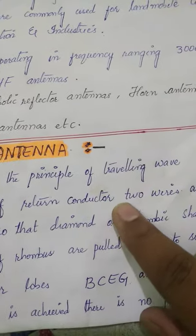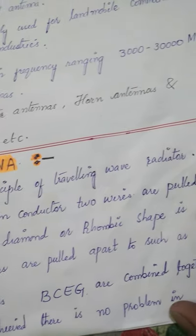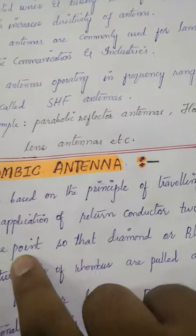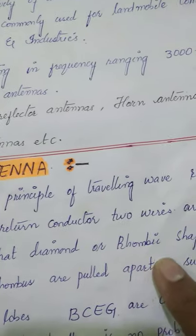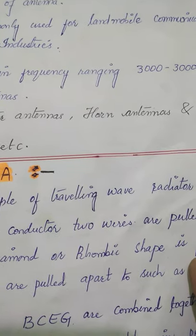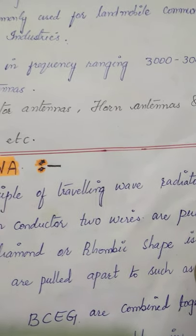By the application of written conductor, two wires are pulled apart at one point so that the diamond or rhombic shape is formed. So rhombic in the sense, we are making the shape in the form of a diamond.